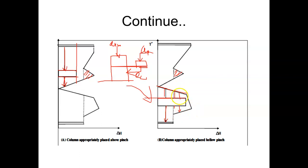The process stream gives energy to the reboiler, which then transfers it through the condenser back to the process. However, the process requires only a limited amount of energy, while the condenser needs to give away more. So the condenser gives only part of its energy to the process; the remainder goes to utility, requiring two condensers. GCC analysis reveals whether you can truly extract and save energy by integrating the distillation column, how much energy can be exchanged, and whether one or two condensers are needed — or whether integration should be avoided altogether.